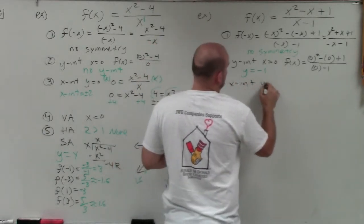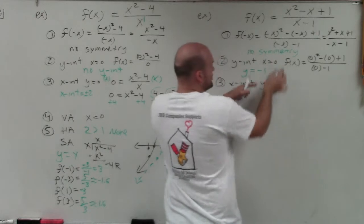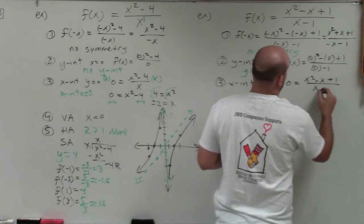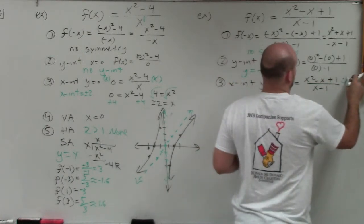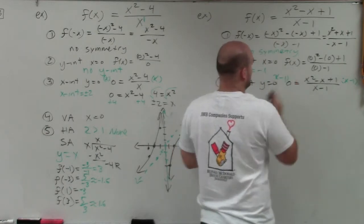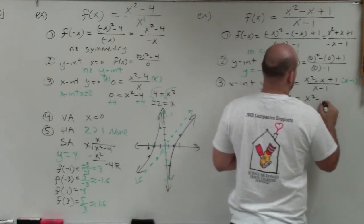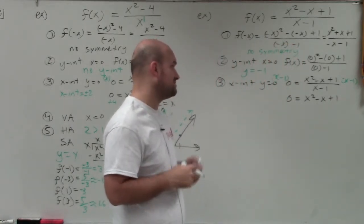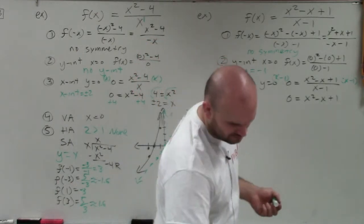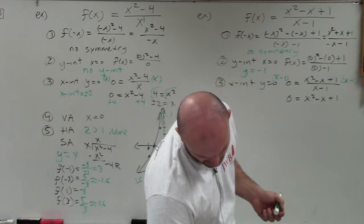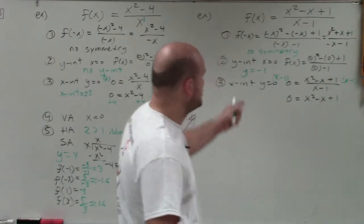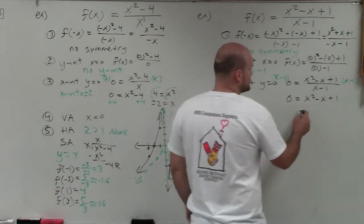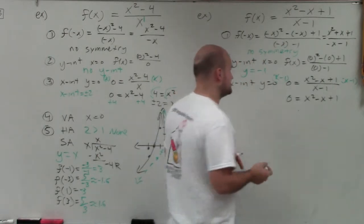For the x-intercept, y equals 0. I'll place 0 for f of x and solve for x. So 0 equals x squared minus x plus 1 divided by x minus 1. Multiplying to clear the denominator, I'm left with 0 equals x squared minus x plus 1. I need to find two numbers that multiply to give 1 and add to give negative 1 — that's not factorable. So let me take the discriminant, which will tell me if I have real or imaginary solutions.